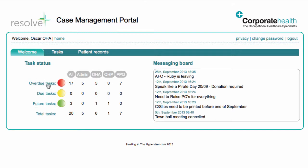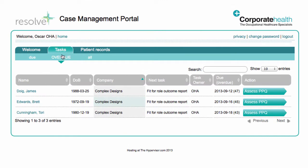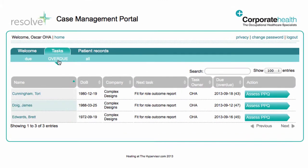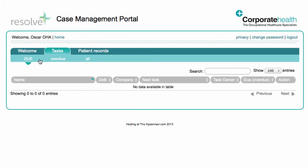For example, clicking on Overdue Tasks will take you to the Tasks page showing only the overdue tasks. Here on the Tasks page, you can navigate to Due, Overdue, or All Tasks using the links in the top menu.